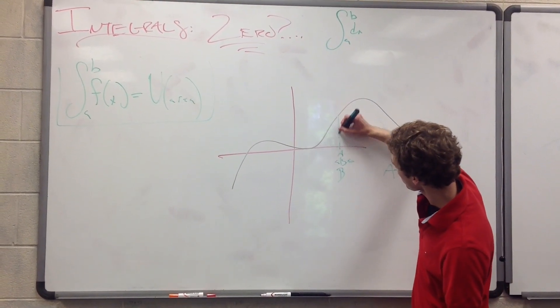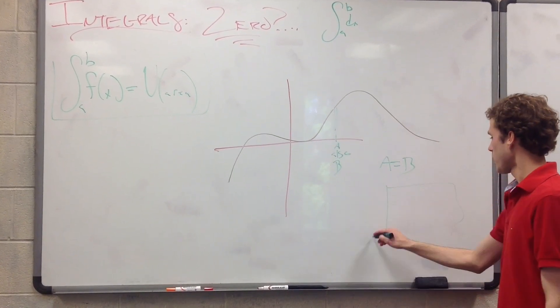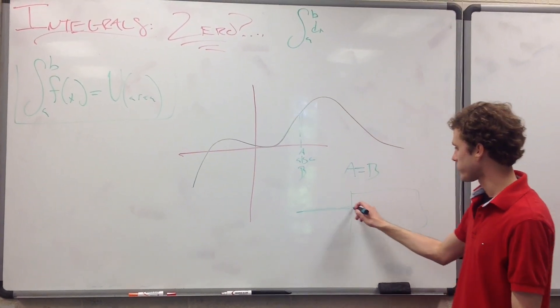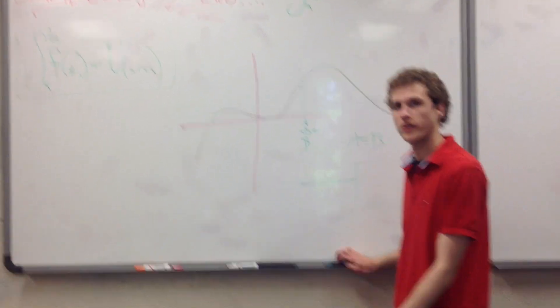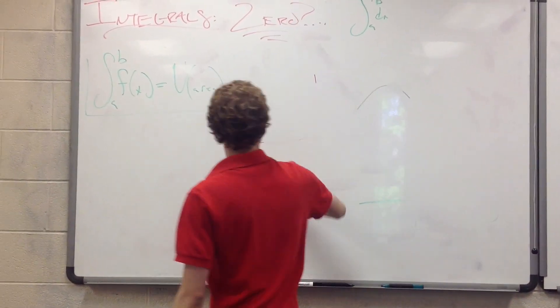So, how much area is right here? None. This is equivalent to making your fence like this, just a protrusion from the outside of the fence. So, that's another way that it could be zero.